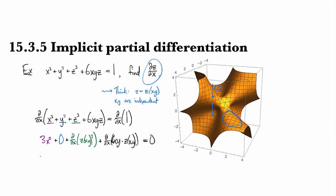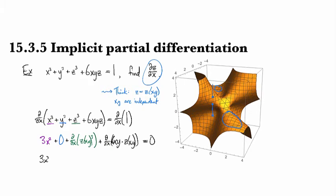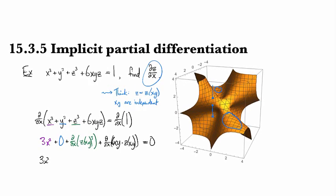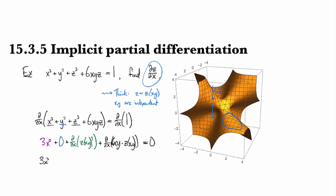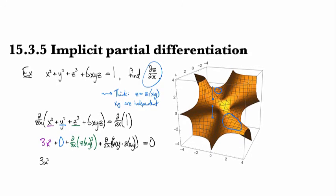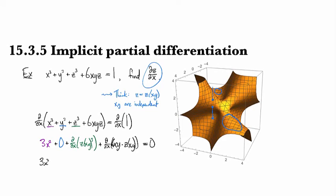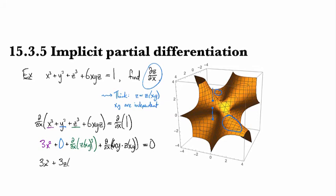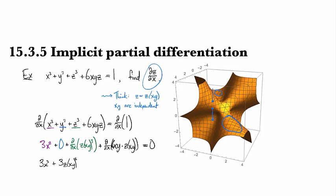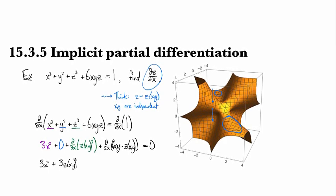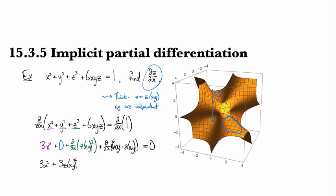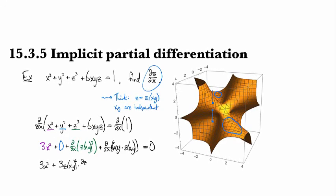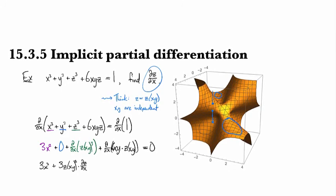So 3x² comes along for the ride. We can ditch the zero. Now for the d/dx of z³, we've got chain rule here. So we've taken z(x) and then we've cubed it. So working through that backwards, we've got 3z(x)² times by the chain rule, the derivative of the thing that got cubed. The thing that got cubed was z, so we need the derivative of z.